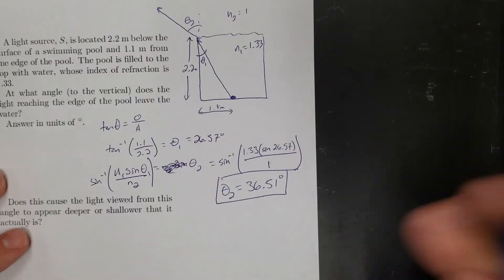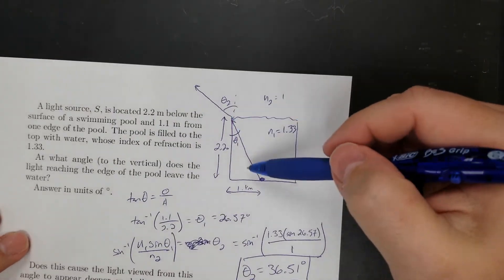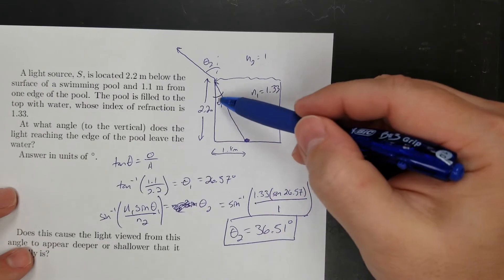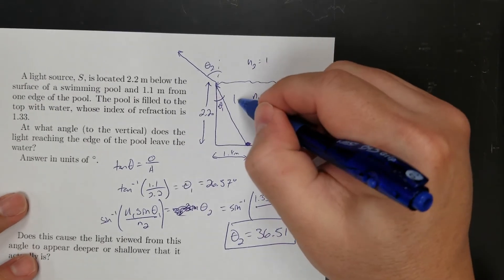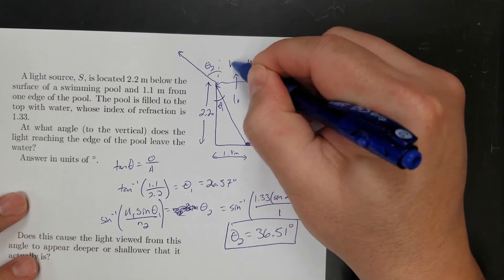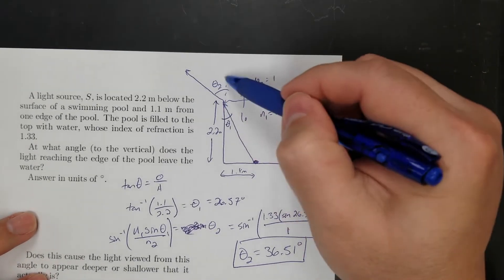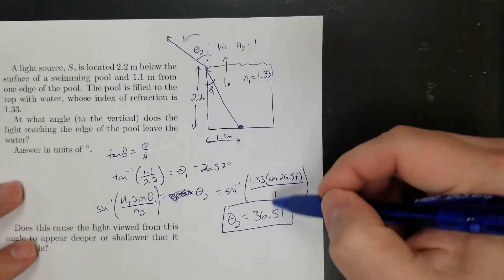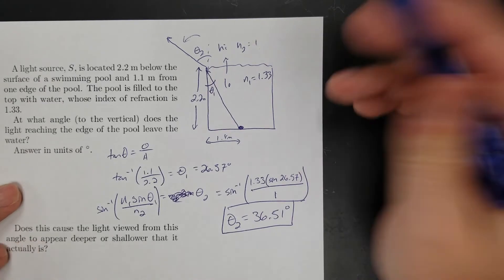Does it make sense? Always ask yourself that. Does it make sense? So yes, to me that makes sense. So I went in at 26 degrees and I came out, and I'm going from a low index to a high index. Low index to high index means you bend away from the normal. So that angle should get bigger, and it did.